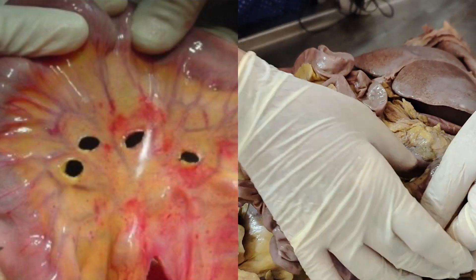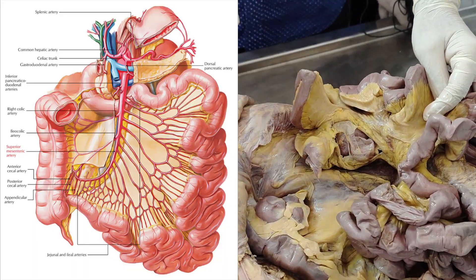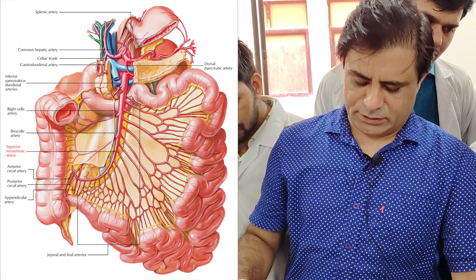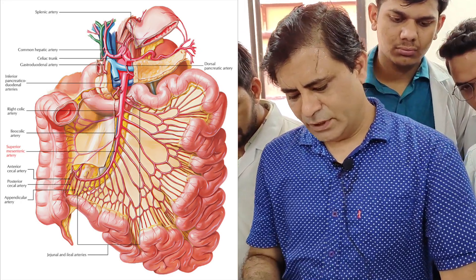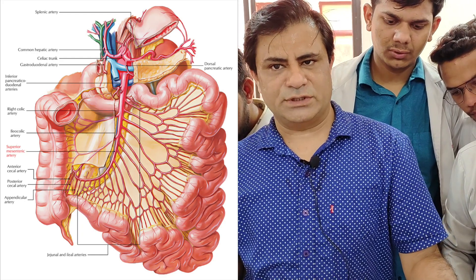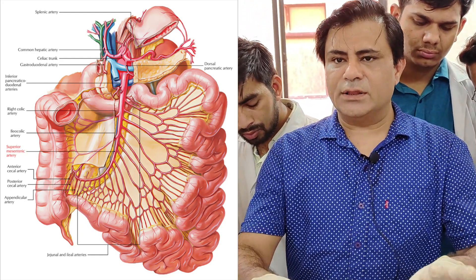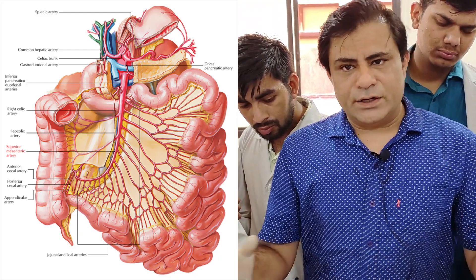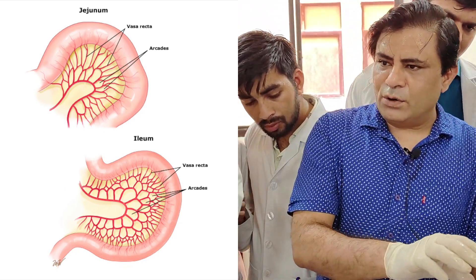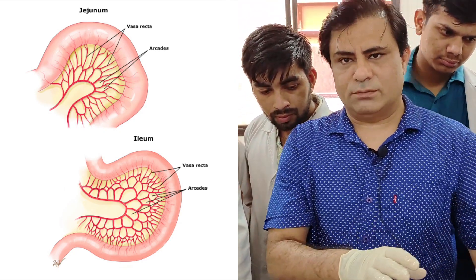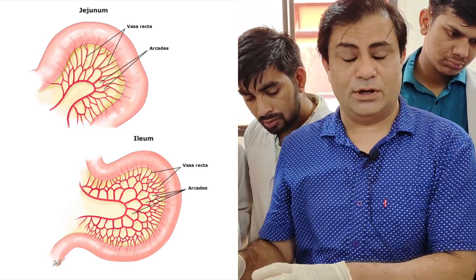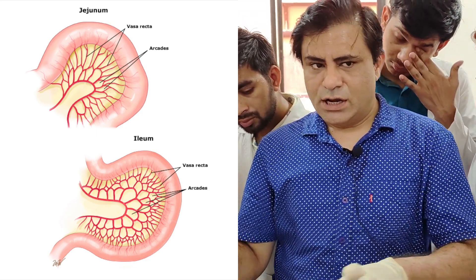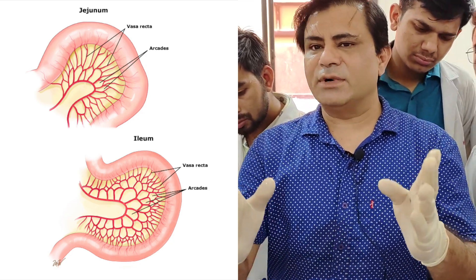In this mesentery, the superior mesenteric artery gives around 14 to 15 branches which enter into the root of the mesentery. These branches are given off on the left side from the superior mesenteric artery. As these branches travel in the mesentery, they anastomose with each other and form arcades. At the level of the jejunum, the arcades are in one or two layers, but towards the ileal portion there will be three or four generations of arcades.